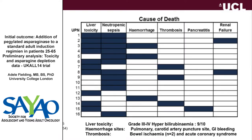We looked into the predominant causes of death in great detail. Rather than just using the data sent to the centre, we interrogated the physician for a narrative about every single patient — this was requested by the trial steering committee. Sepsis was a huge issue. A lot of patients also had extreme liver toxicity at the time of death. A couple of patients had a thrombotic event as the major cause of death — in two of those, it was bowel ischemia, and in one patient, an acute coronary syndrome, which we believe were likely related to pegylated asparaginase. Hemorrhage contributed to death in a couple of individuals, and pancreatitis accounted for the death of only one individual.